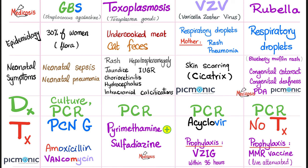Toxoplasmosis — that's the T in TORCH. Risk factors: undercooked meat and exposure to cat feces. Neonatal symptoms: don't forget the hydrocephalus, chorioretinitis, and intracranial calcifications. Diagnosed by PCR; treatment is pyrimethamine plus sulfadiazine.